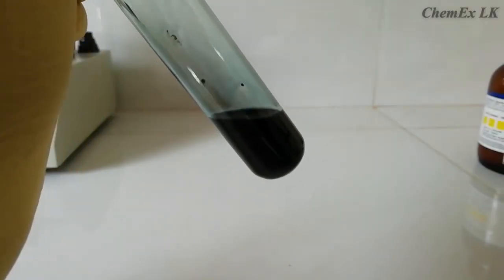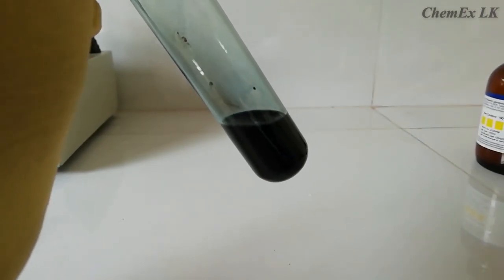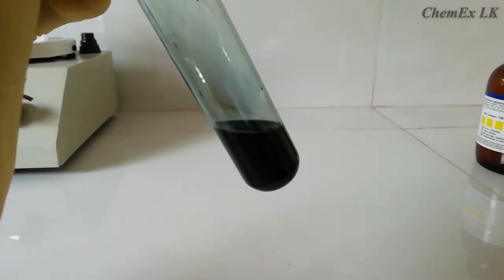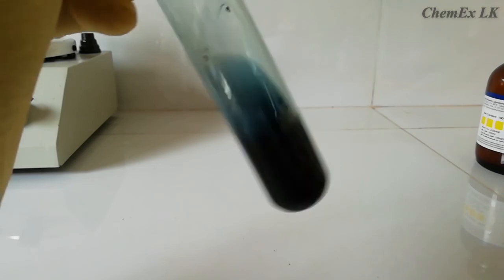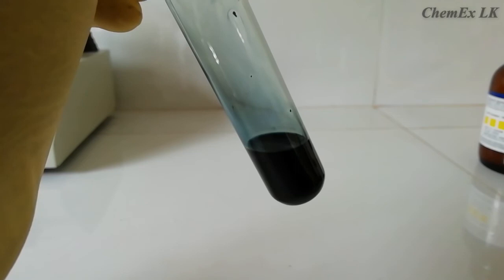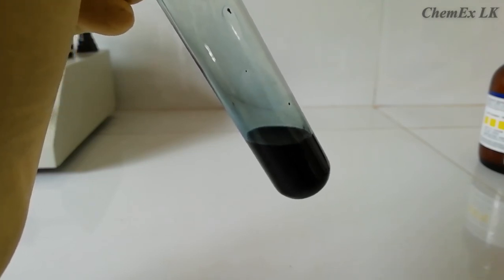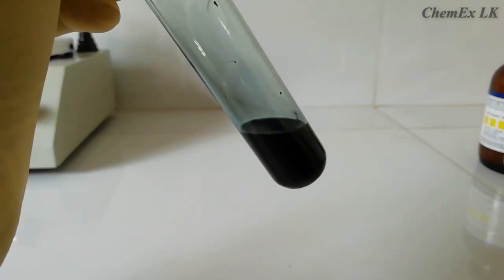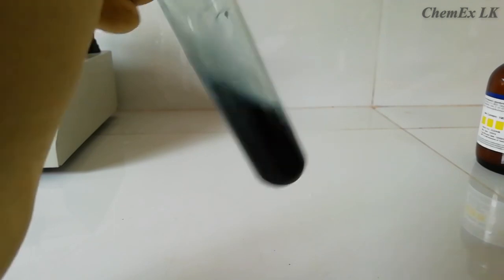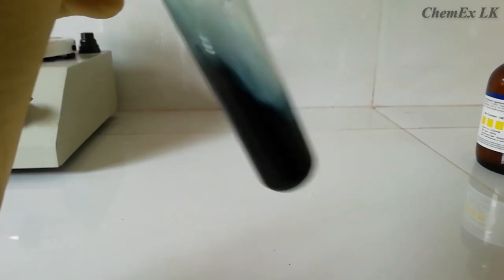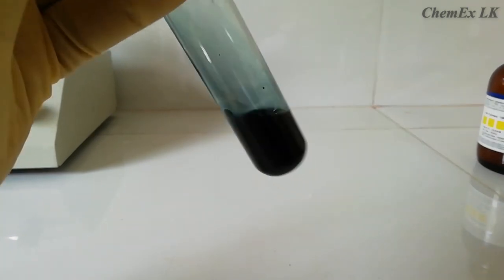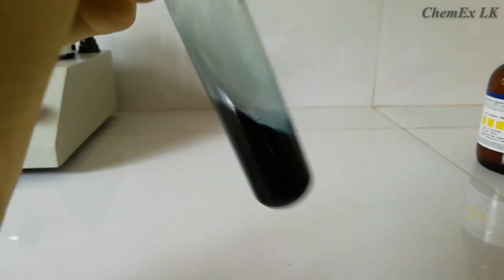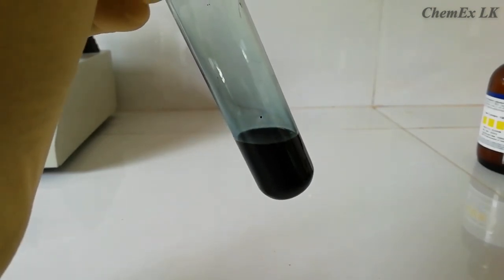From this video, we learn about how to do the Lieberman nitrosamine reaction to identify secondary amine. The positive results are: if we add concentrated sulfuric acid along the wall, we can see a green color. After we dilute the solution with distilled water, it gives red color. Then, we add sodium hydroxide to the solution, it turns into deep blue color. In that way, we can identify our sample has a secondary amine group.